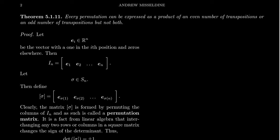So why can't we have a factorization which is both even and odd in terms of the number of transpositions? There are a lot of different ways of proving this one, a lot of different proofs.